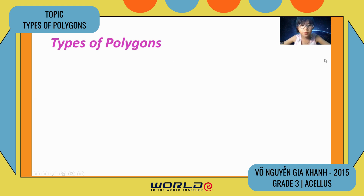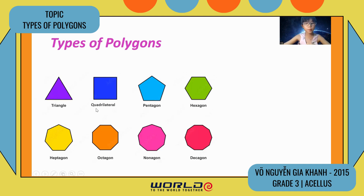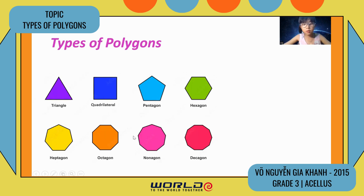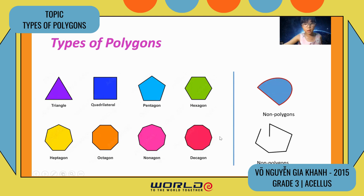First is about types of polygons. There are lots of polygons. Some of them we know as triangle, quadrilaterals, pentagon, hexagon, octagon, nonagon, and decagon. Those are polygons.